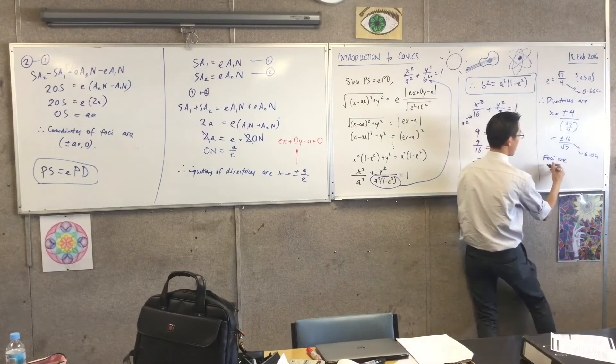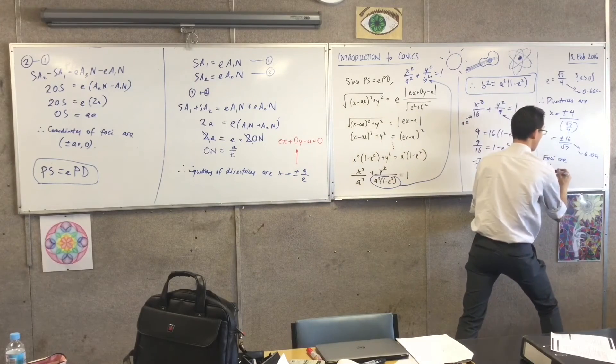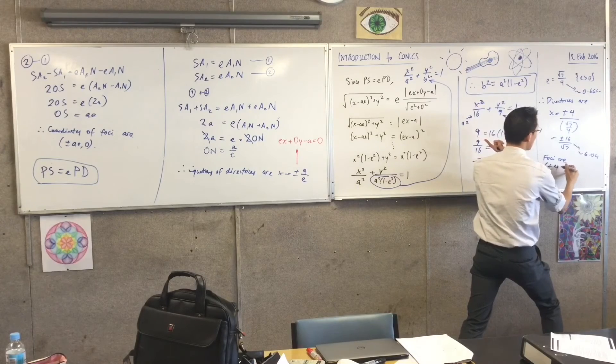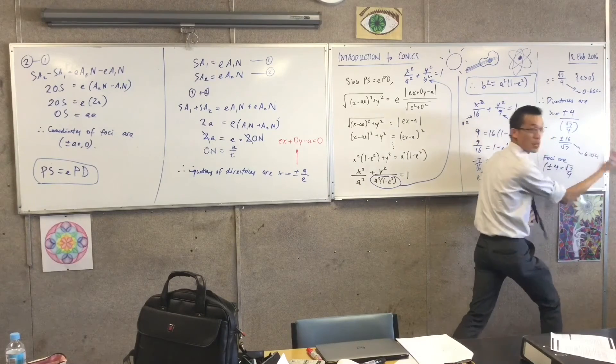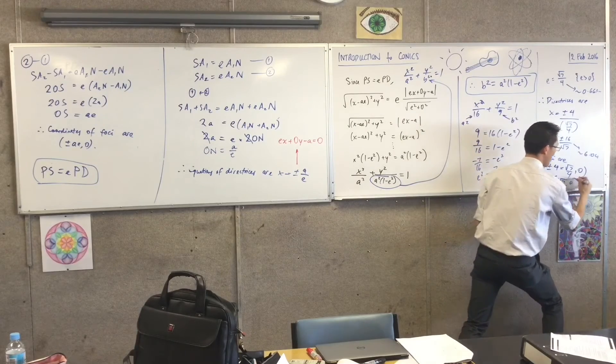In the same way, I can work out what the foci are. The foci are plus or minus ae comma 0. That's plus or minus, a is 4 we already said that, times root 7 on 4. So you get some nice canceling there. That's kind of handy. So you're just getting plus or minus root 7 comma 0.